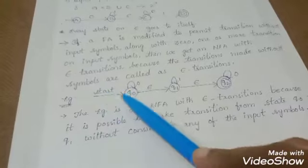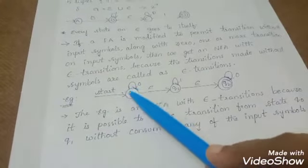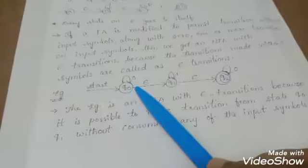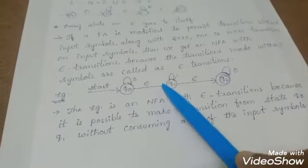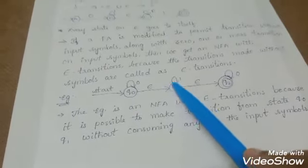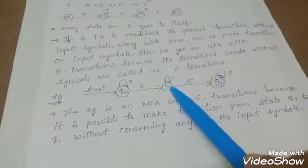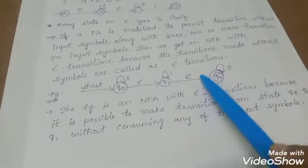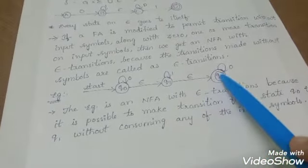Start state Q naught is the start state. On taking input as epsilon, it is moving to state Q1. And Q1, on taking input as epsilon again, it is moving to state Q2.